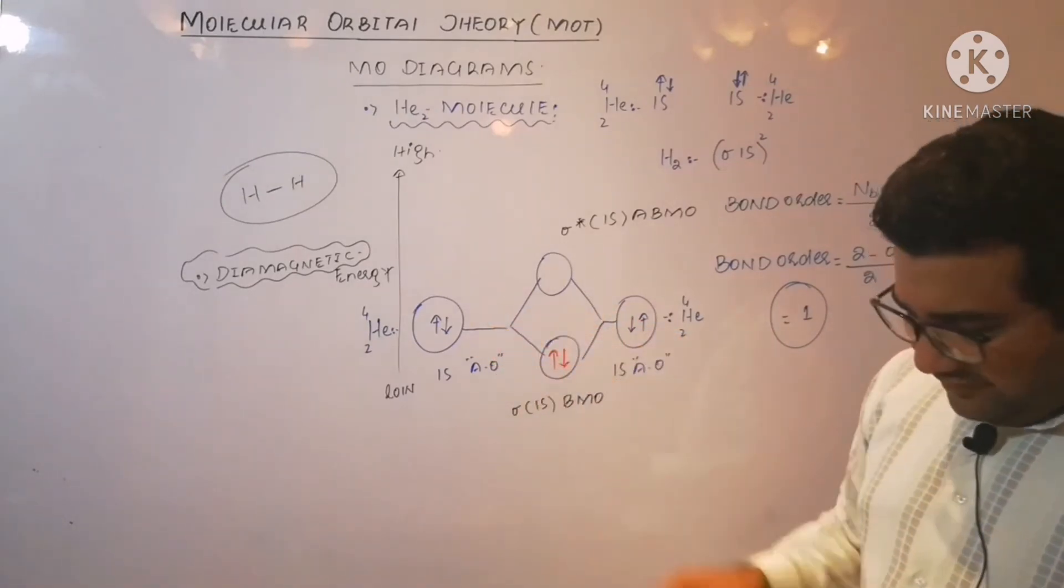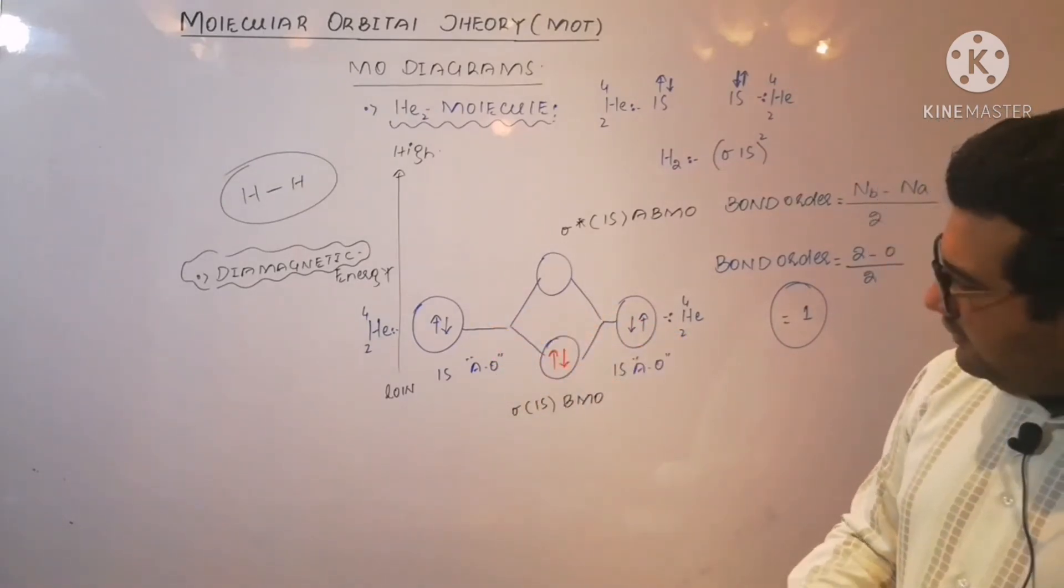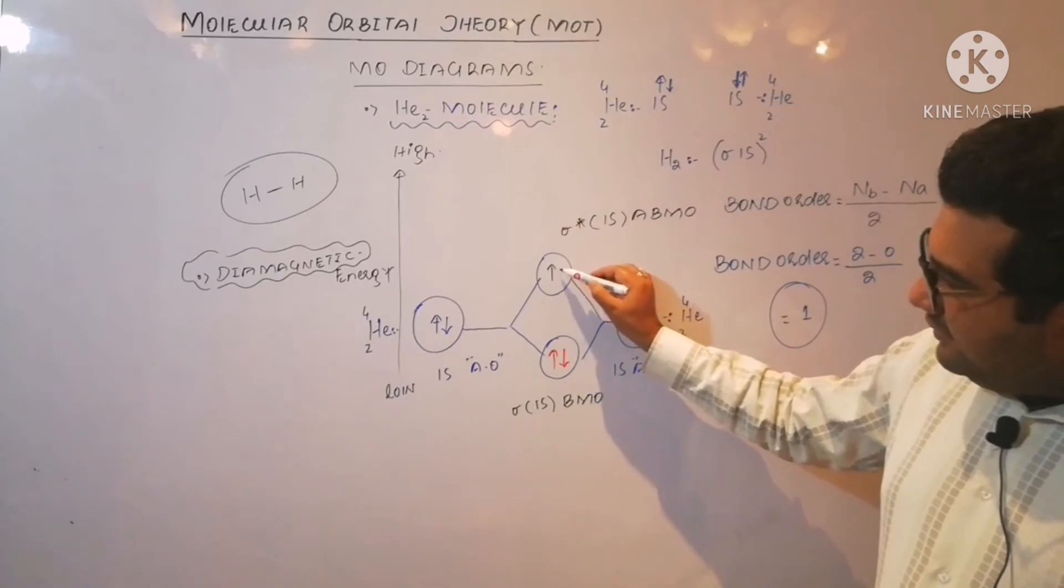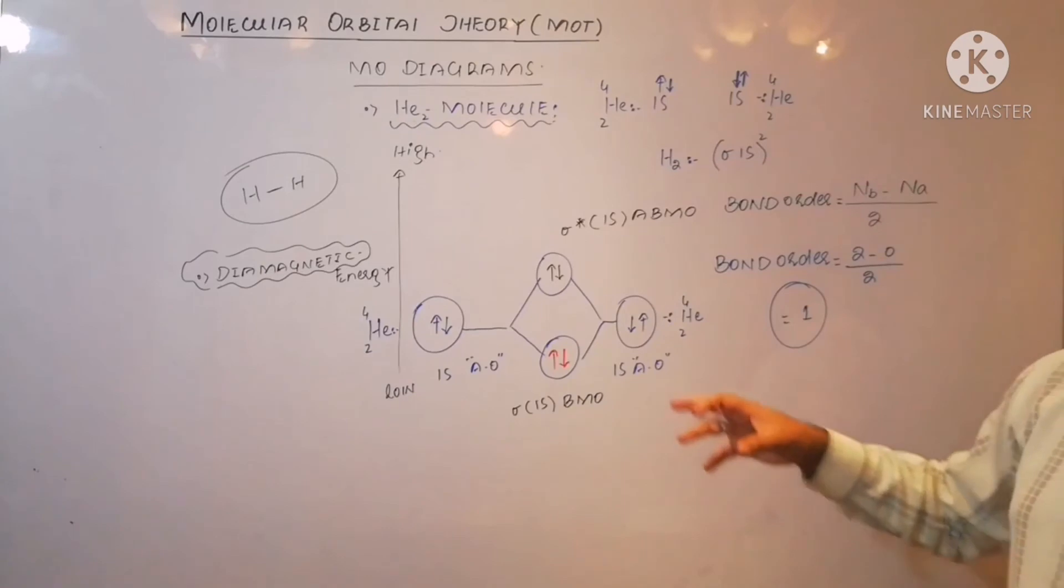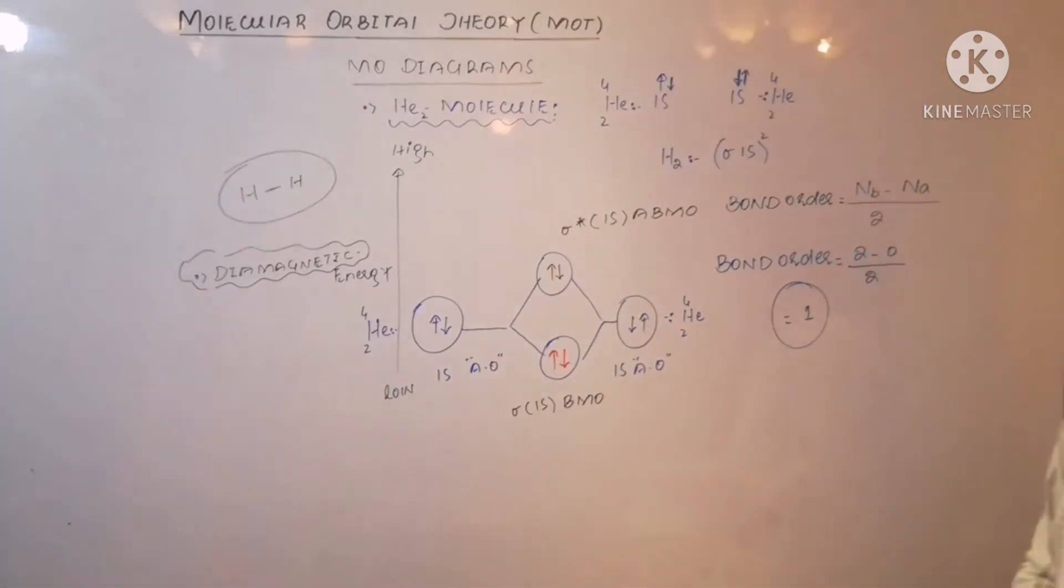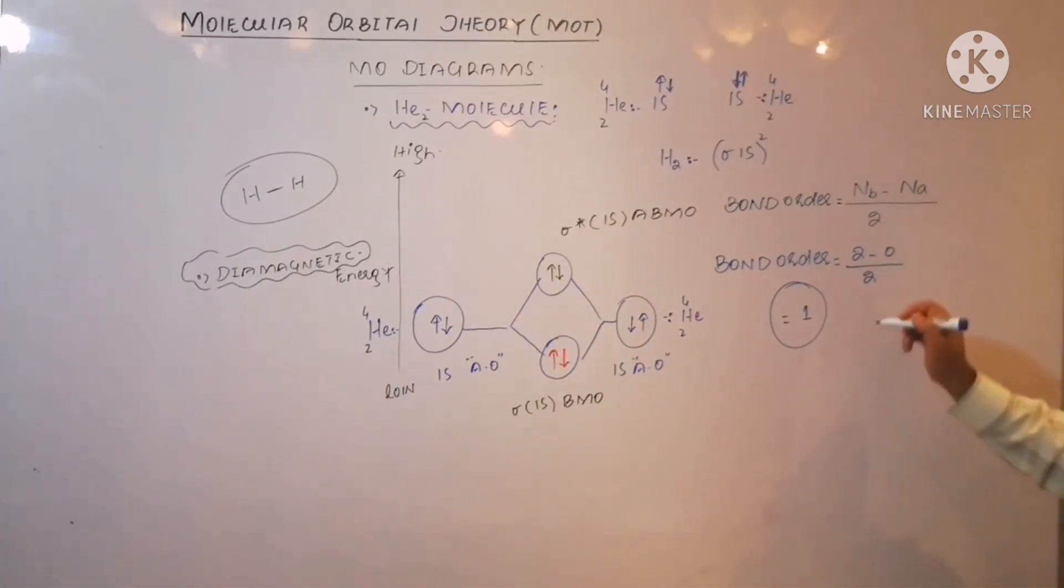Now total electrons are 4. Two will be filled in the sigma bonding molecular orbital, and the other two will be filled in the sigma star 1s anti-bonding molecular orbital. Now let us calculate the bond order for helium. In case of helium, the number of electrons in bonding molecular orbital are 2, and the number of electrons in anti-bonding molecular orbital is also equal to 2. So 2 minus 2 divided by 2, that should be equal to 0.